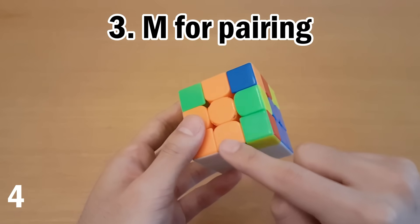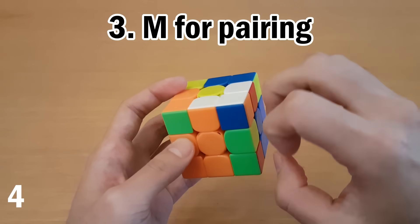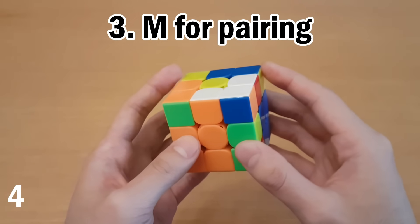Now, when you use the M slice, you want to be strategic about how you can immediately pair pieces up. Just like in CFOP, where when you take pieces out of slots, you want to pair them up. In this case, when you take pieces out of the M slice, if you can, you want to pair them up.